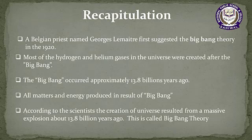Question number three: how many years ago did the Big Bang occur? The Big Bang occurred 13.8 billion years ago. Question number four: which things were produced as a result of the Big Bang? All matter and energy were produced as a result of the Big Bang.